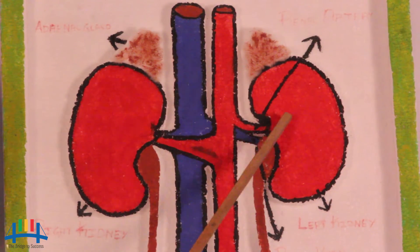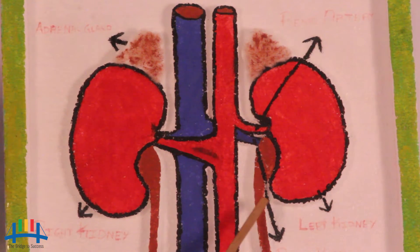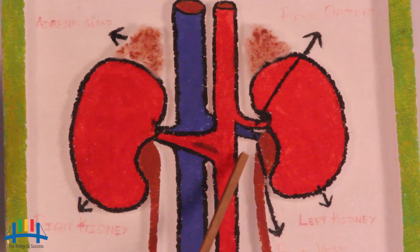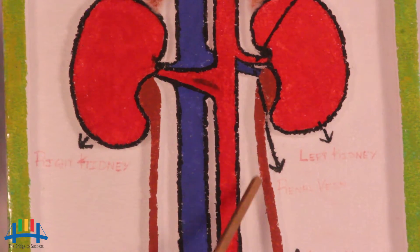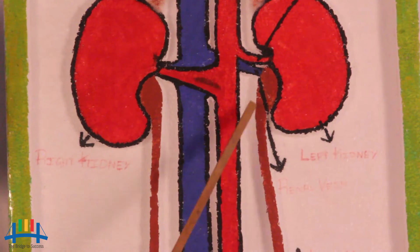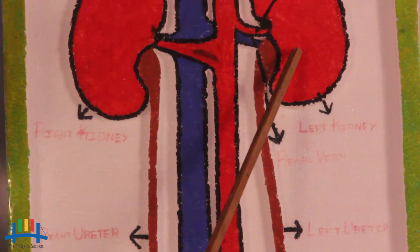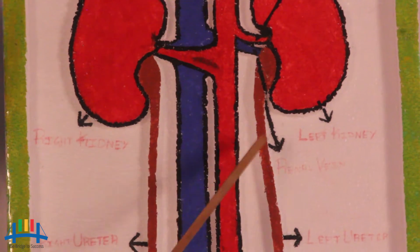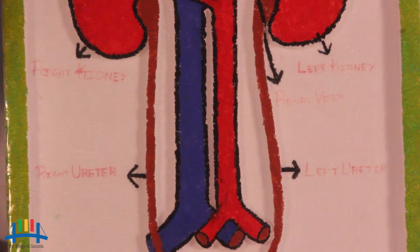After filtration, the waste products are sent out from the two kidneys through the ureters. There is a right ureter and a left ureter — two ureters in total, which are tube-like white structures approximately 10 centimeters in length. Their function is to carry waste products from the kidneys to the urinary bladder.